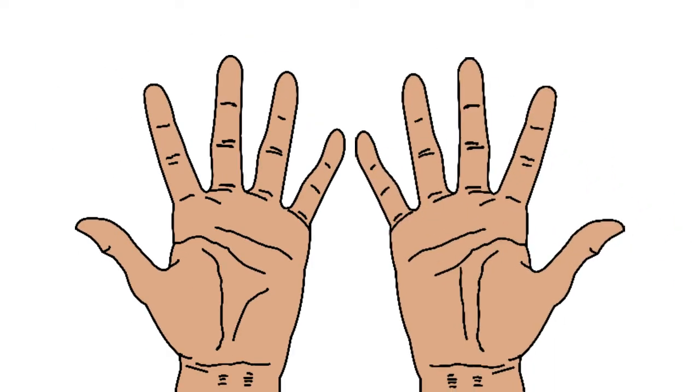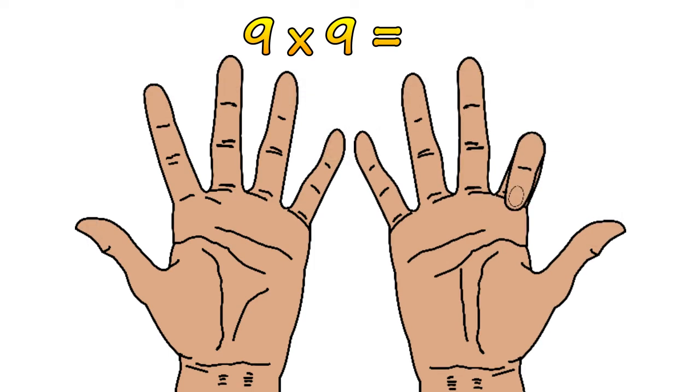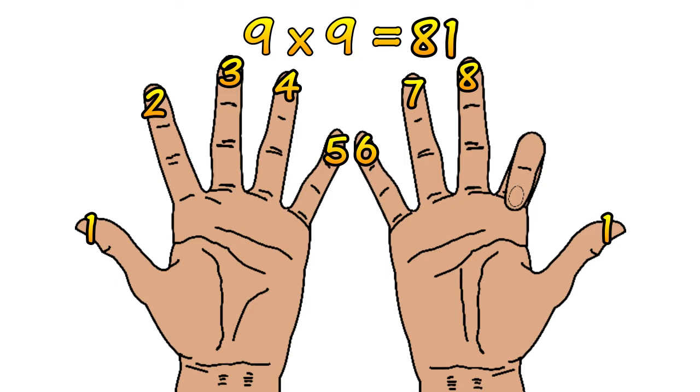Say we wanted to do 9 times 9. Put the 9th finger down. And we count to the left of the 9th finger. And there are 8 fingers to the left of it. And 1 finger to the right of it. So therefore 9 times 9 equals 81. And that's all there is to it.